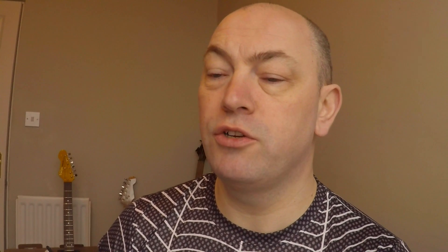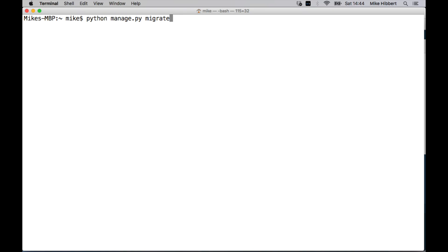Now we have Raj Verma, who commented on Python Django tutorial number 14, file uploading and updating database schema. The error is: no such column registration_registration.thumbnail. Extrapolating from that, I think you've done the run server thing, attempted to load a page, and got this no such column registration thumbnail error. If you're running the current version of Django, you'll have to run migrations. If you don't run the migrations, it won't find those columns in your database, and that's where you get the errors.